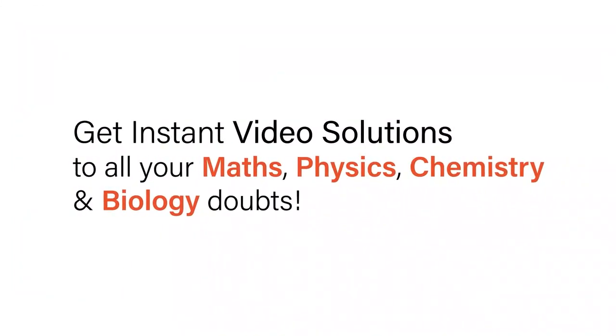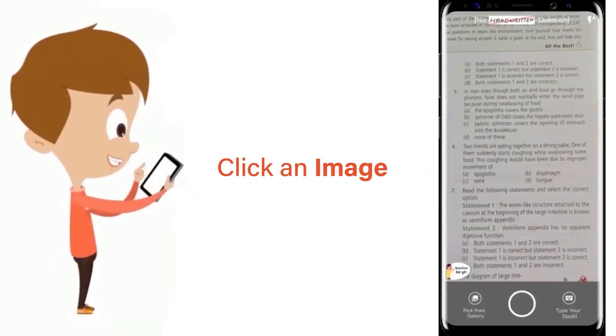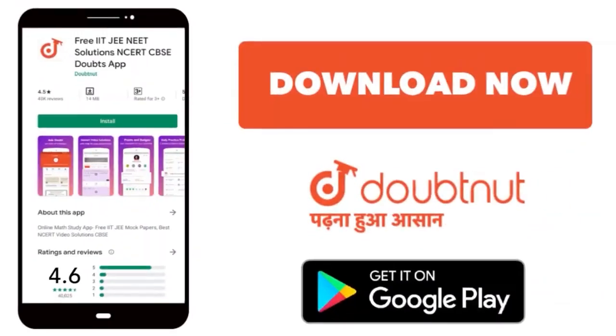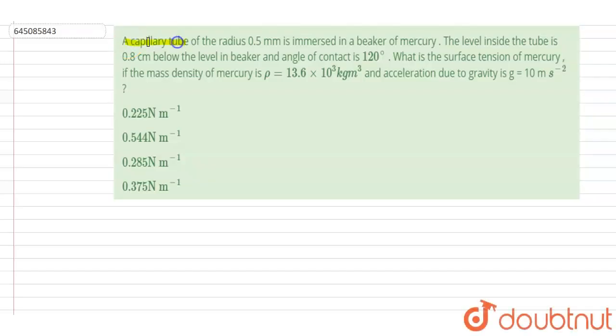With Doubtnut, get instant video solutions to all your maths, physics, chemistry and biology doubts. Just click the image of the question, crop the question and get instant video solution. Download Doubtnut app today. Hello everyone, a capillary tube radius 0.5 mm is immersed in a beaker of mercury.